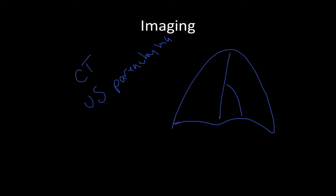When looking at a chest x-ray, the things you want to look for are not just extra shadows. It's actually the loss of what you expect to see. For example, loss of the heart border, loss of the diaphragm, loss of the costophrenic angle, and also the pattern of the infiltrate.